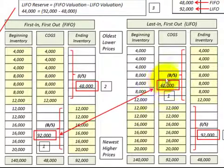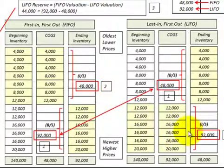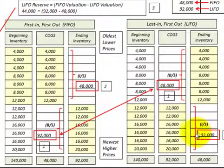You can see between our LIFO and FIFO we definitely have a difference in inventory value. On our balance sheet, we had $48,000 of ending inventory for LIFO versus $92,000 for FIFO — an increase going from LIFO to FIFO. For cost of goods sold, LIFO recorded $92,000 while FIFO recorded $48,000, so there is a decrease in cost of goods sold when going from LIFO to FIFO.